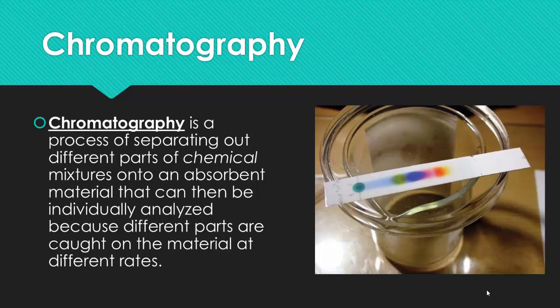If you use a black sharpie in a chromatography as your main source point, you'll actually realize there's about four or five other colors that are in that black sharpie ink.